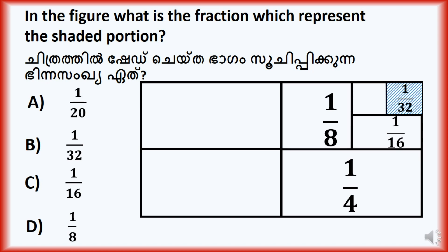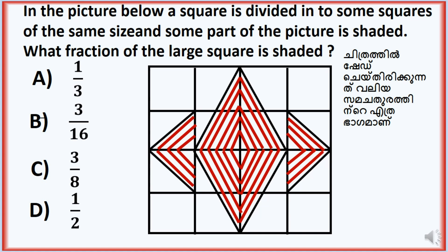In the picture below, a square is divided into some squares of the same size and some part of the picture is shaded. What fraction of the large square is shaded? A square is divided into some squares of the same size.